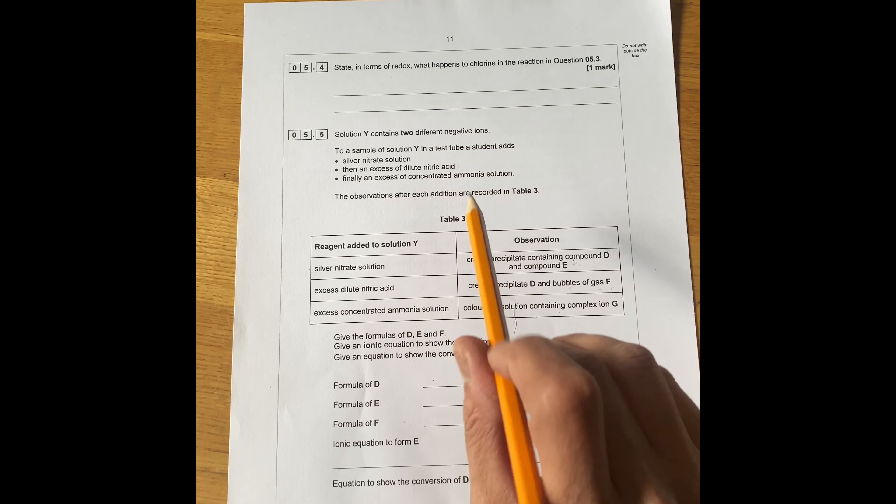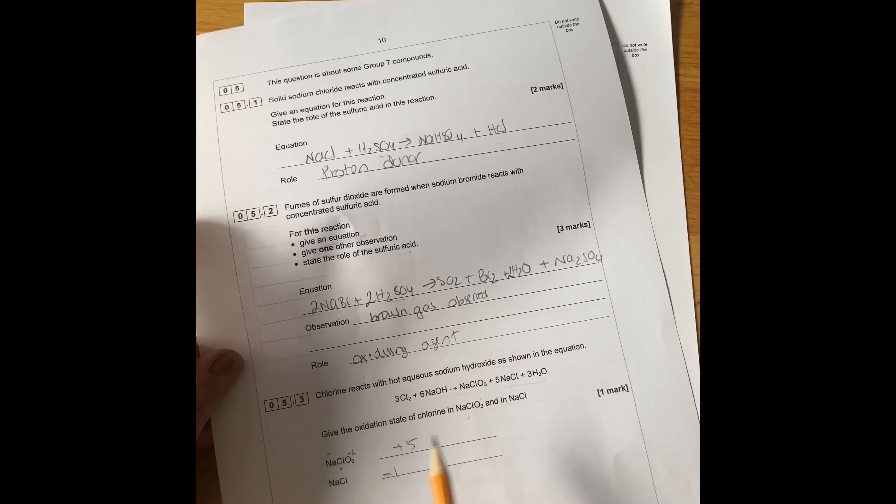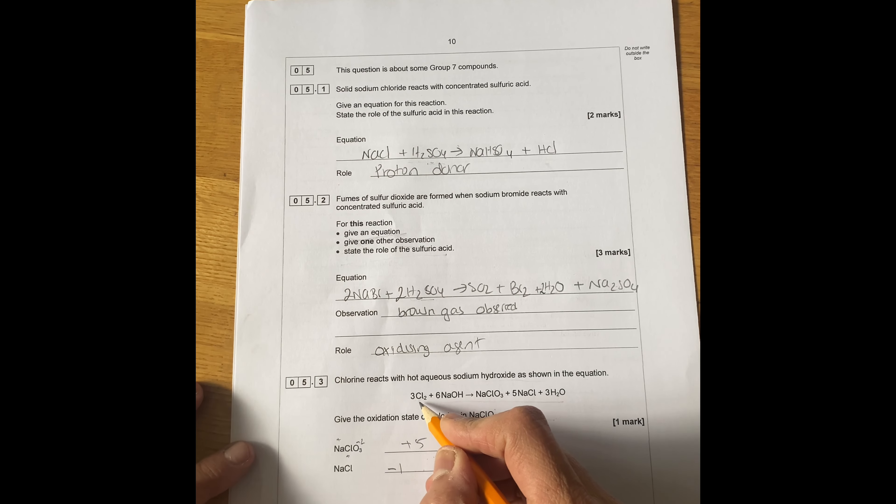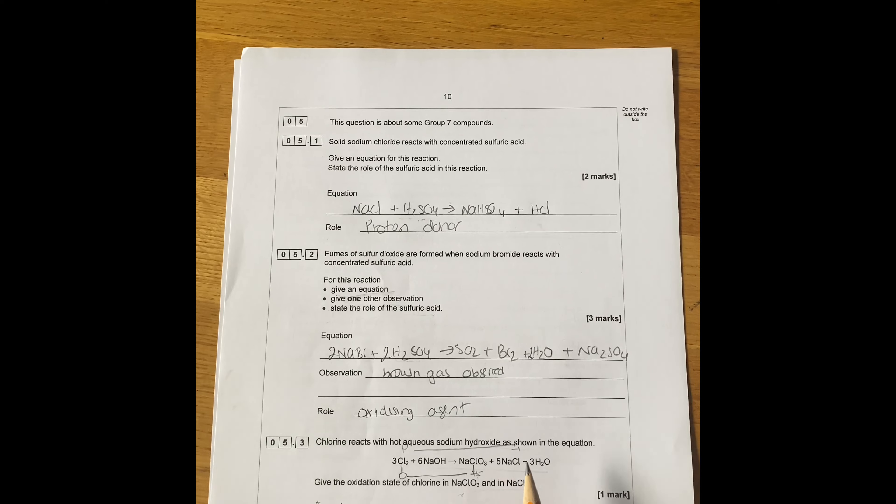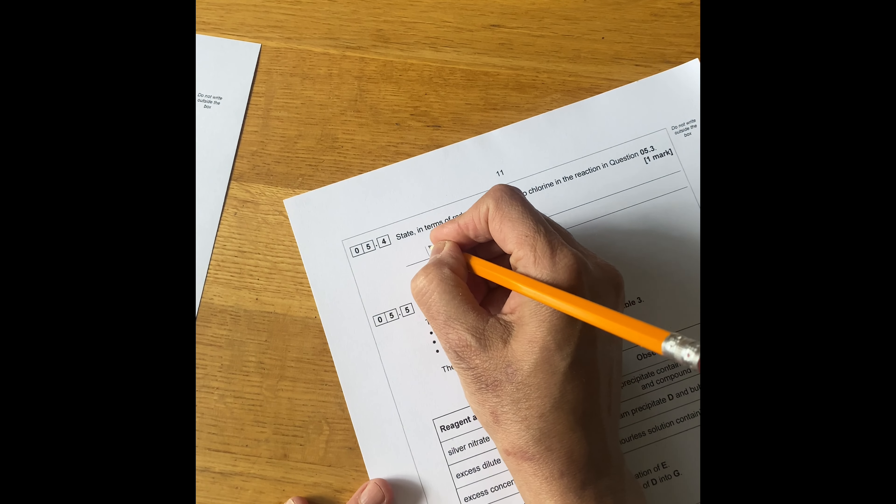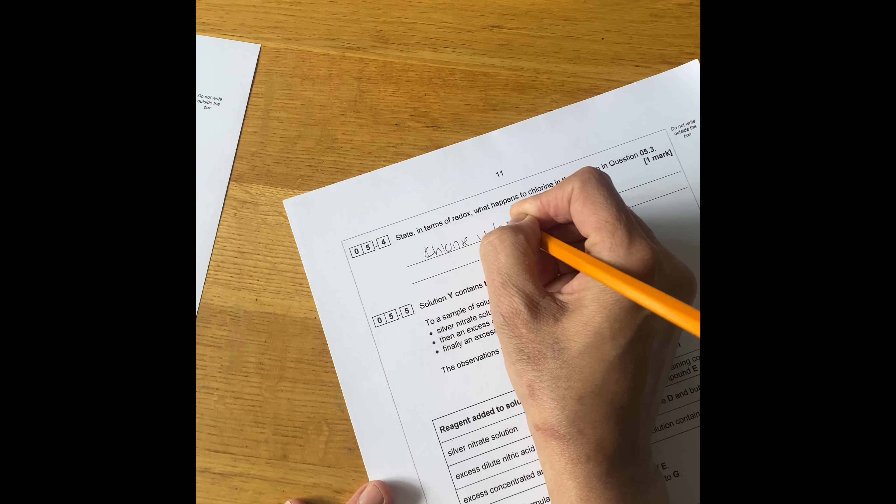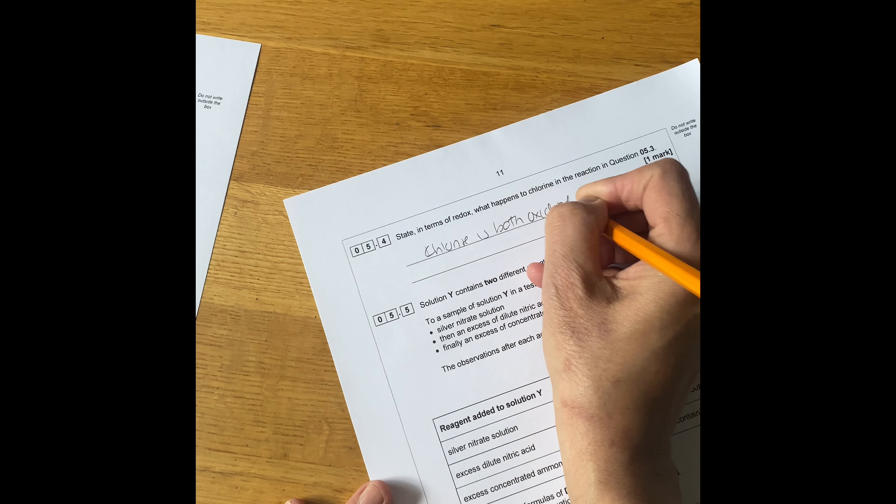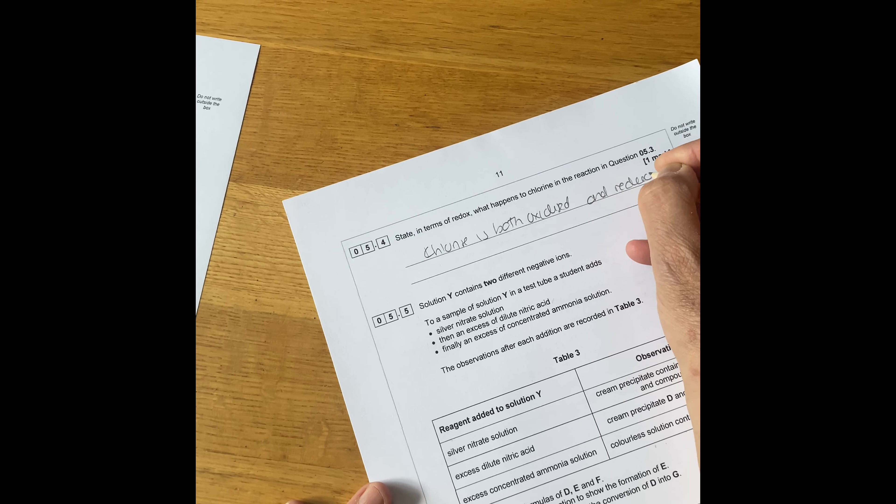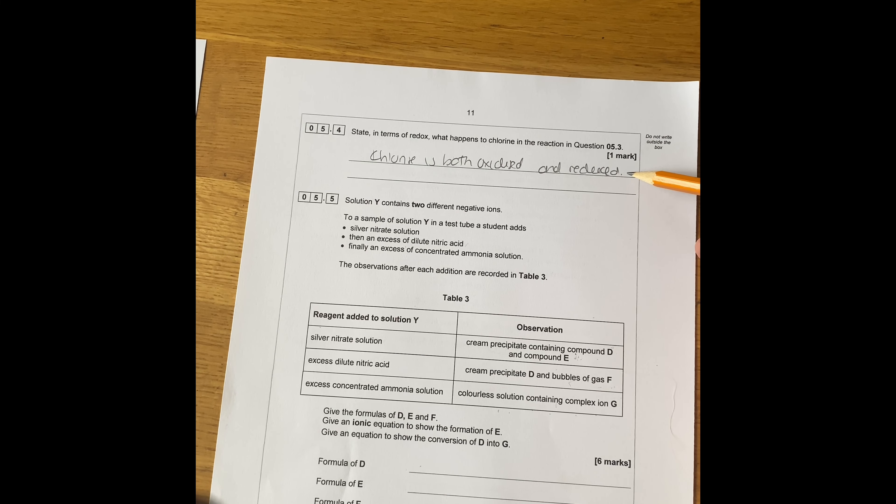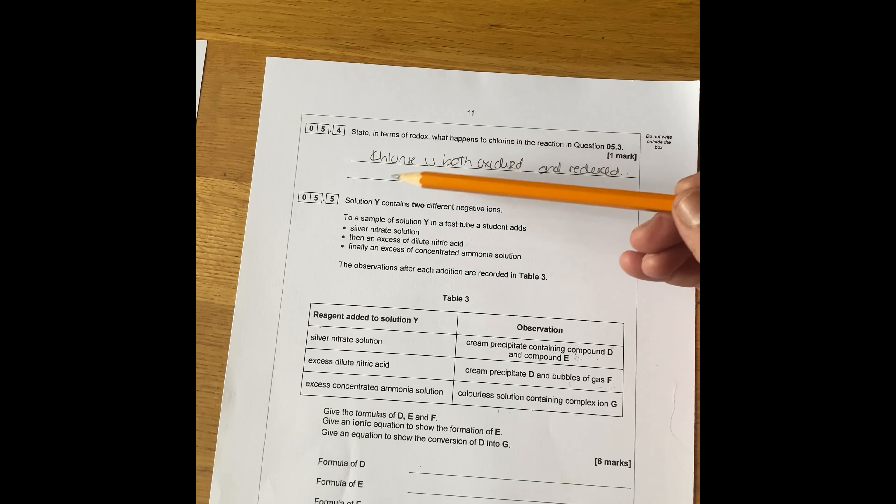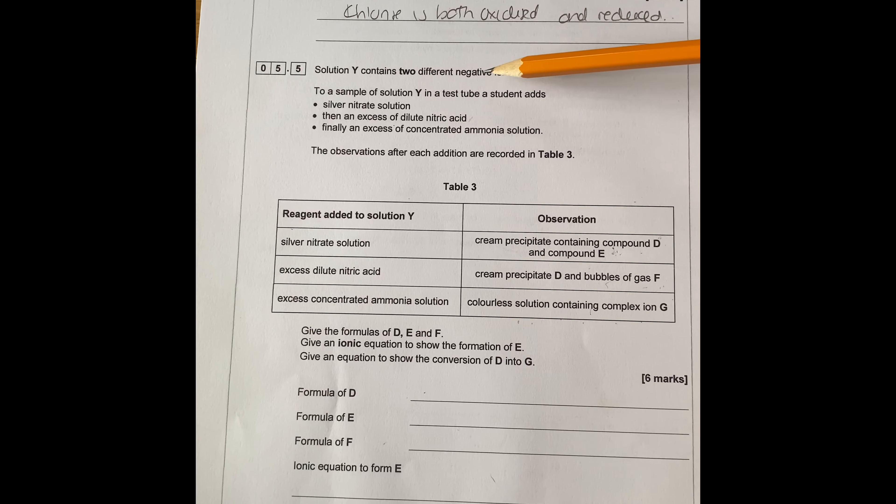Question 5.4 says state in terms of redox what happens to chlorine in reaction in question 5.3. So you have chlorine at oxidation number zero and it goes to plus five. Also minus one. Chlorine is both oxidized and reduced. And if you remember, this is called disproportionation reaction when the same element is both reduced and oxidized.